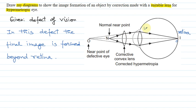This is the natural lens of the eye. Next we have used the corrective convex lens. What is the property? The corrective lens converges light rays.